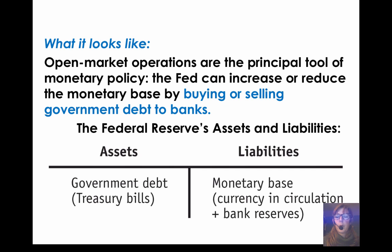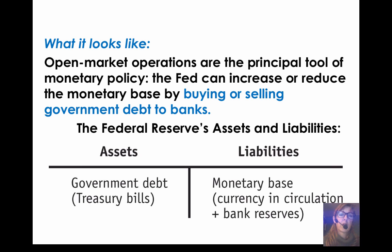Here's what open market operations look like in practice. The Fed buys or sells government debt — government bonds, Treasury bills, Treasury bonds; those are all synonyms. On the asset side of the Fed's T-account, the Federal Reserve owns government debt because it's bought some in the past, and its liabilities are the monetary base.